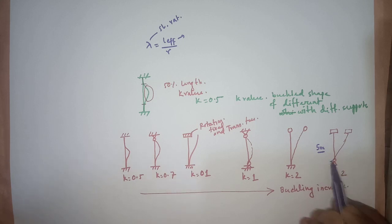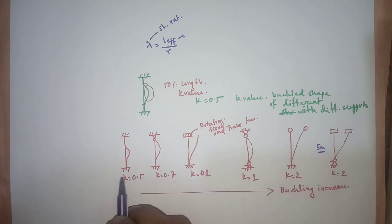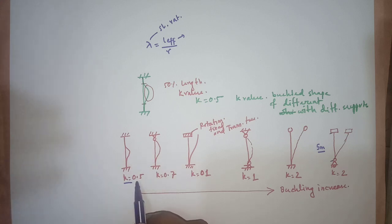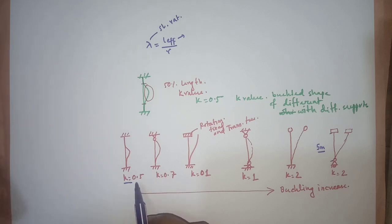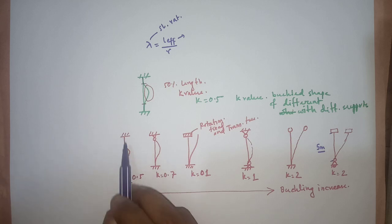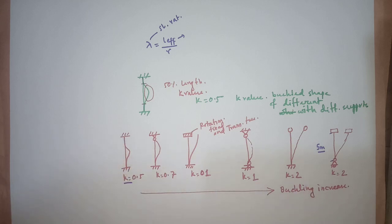If the actual length of a column is 5 meters and k equals 2, the effective length will be double — 10 meters. On the other hand, if both ends are fixed, k is 0.5, so the effective length is only half the total length. From this we can conclude that the both-ends-fixed column is more efficient than the others.